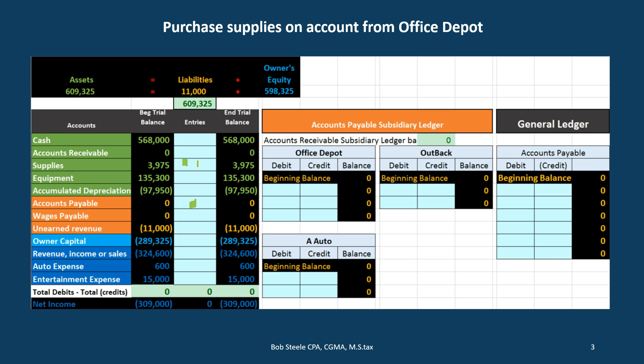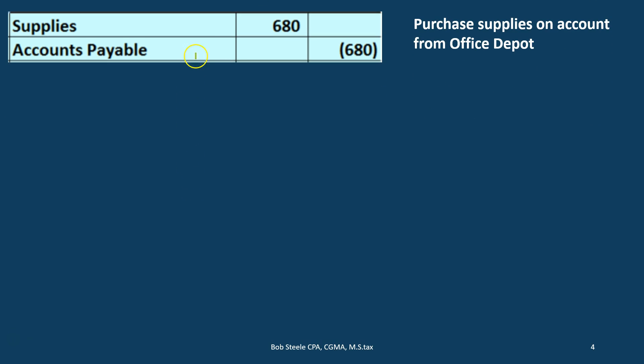We're going to buy the supplies, put them on as an asset, then count the supplies at the end of the time period and expense the amount that we have used. The accrual concept here being that when we buy the supplies, we haven't yet used them — therefore they should be an asset used for the future. When we do use the supplies, we should then expense them as they are used. We can see that supplies has a debit balance — we're going to make the supplies go up by doing the same thing to it, which in this case would be a debit. The credit then will be to accounts payable. Accounts payable has a credit balance — it's a liability. We're going to make it go up by doing the same thing to it, which is a credit. So: supplies goes up with a debit, accounts payable goes up with a credit.